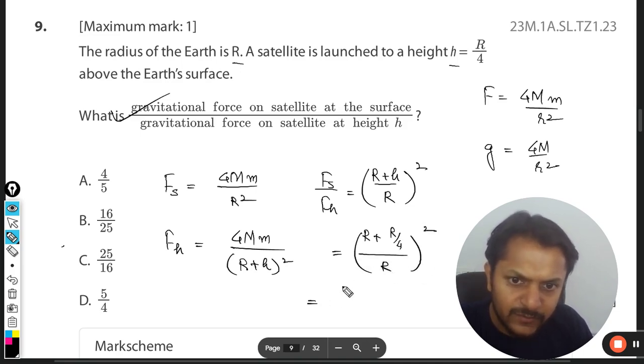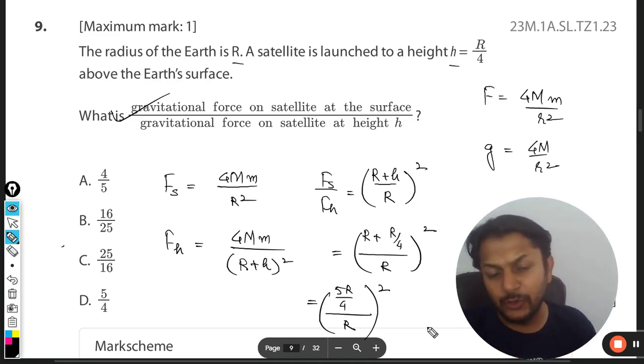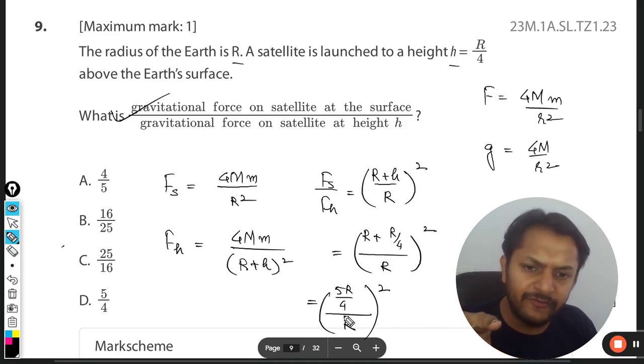This will become (5R/4 ÷ R)². Please be careful about the algebra. The LCM is taken only in the numerator, it becomes 5R/4, and this is the bigger one, like R/1.